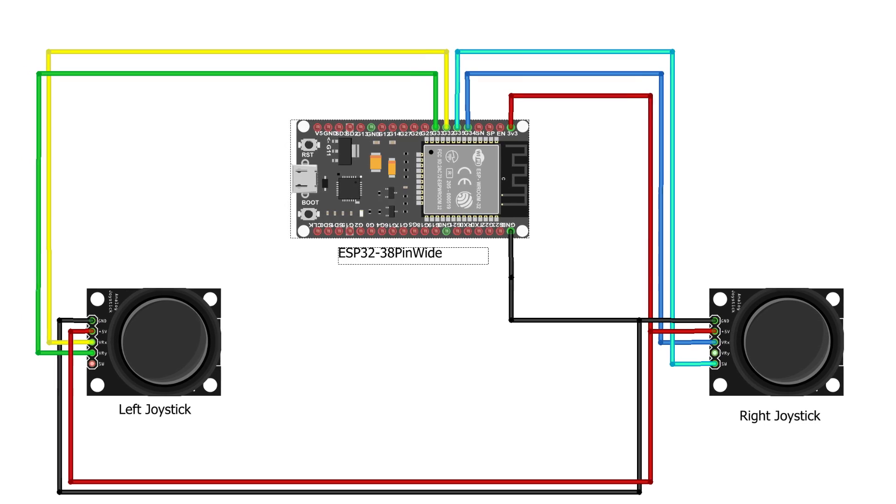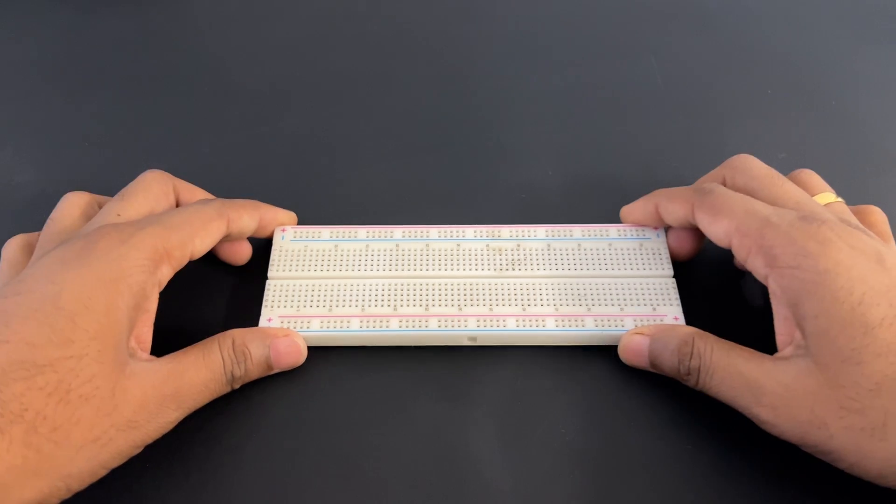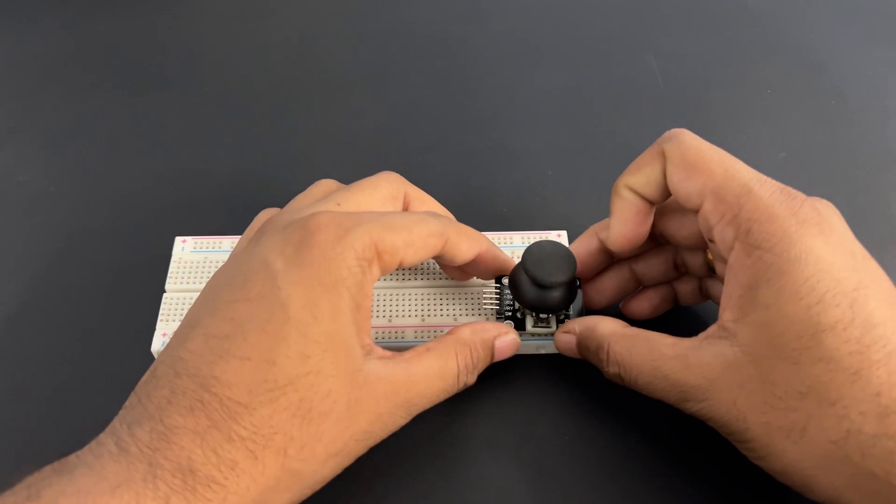Let's make a connection as per circuit diagram for transmitter. Attach left and right joystick using double sided tape on breadboard.